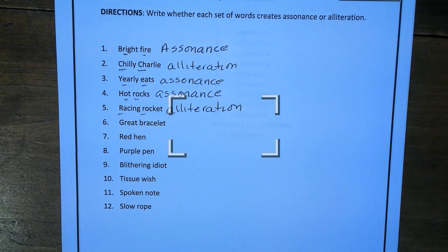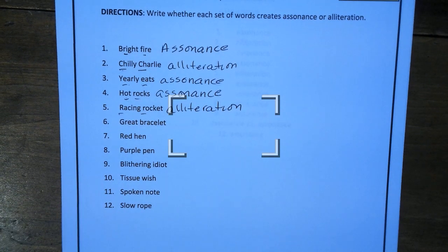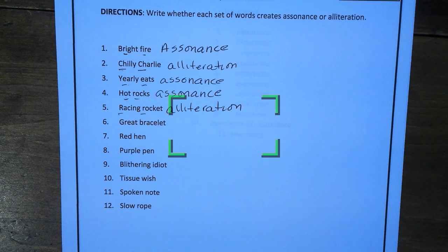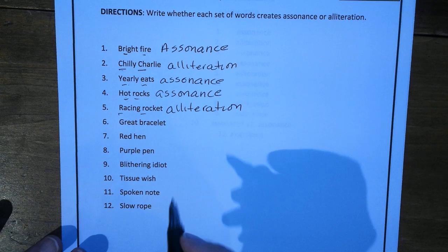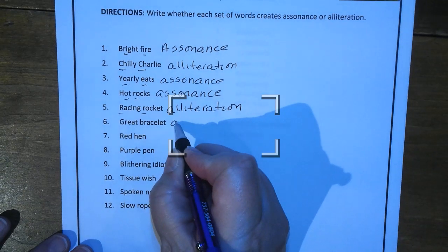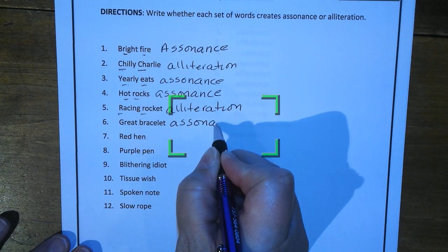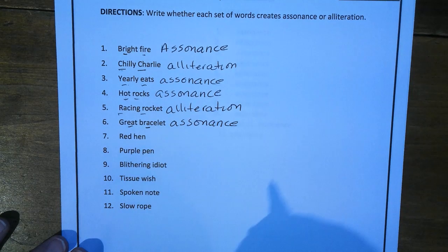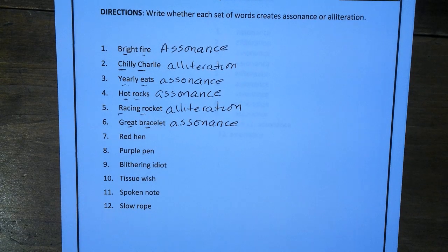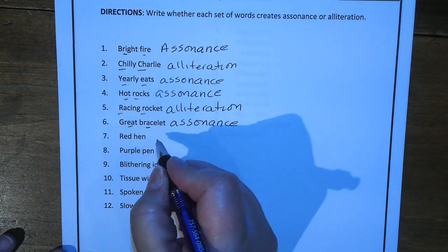Great bracelet — notice it's different letters. It's the E-A that makes a long A sound in 'great,' and bracelet is just the A, so this is assonance. Red hen — it's the E sound, so again, assonance.